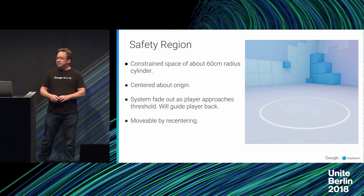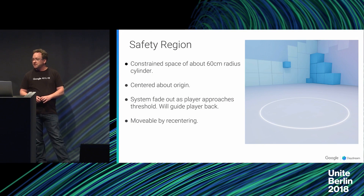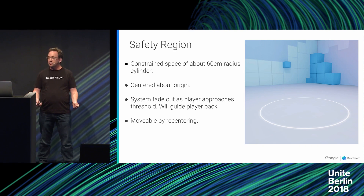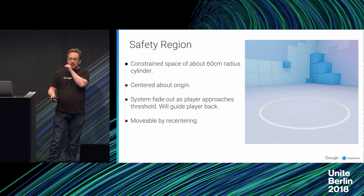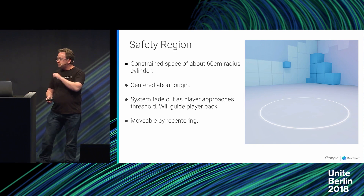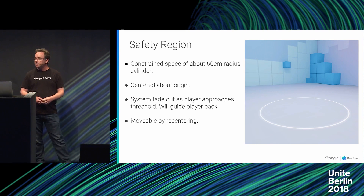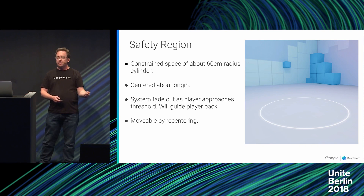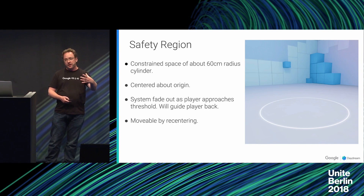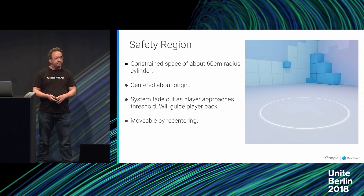WorldSense helps keep users safe in the expanded 6DOF space by constraining users to a safety region of about a 60 centimeter radius cylinder centered about the origin. As the user approaches the threshold, the system will fade the display out to gray and provide the user with directional feedback in the form of an arrow guiding them back inside the safety region.